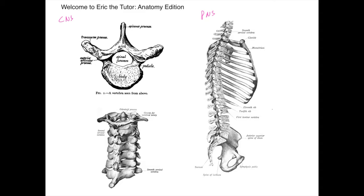So here we have some bony anatomy. We're going to look at a single vertebra, which makes up one of many in the vertebral column. We have a spinous process and a body. The body is located anteriorly and the spinous process is the most posterior. So our diagram shows an anterior view on the right and a posterior view on the left — I can tell because the bodies are lined up on the right and the spinous processes point posteriorly.